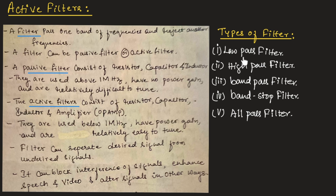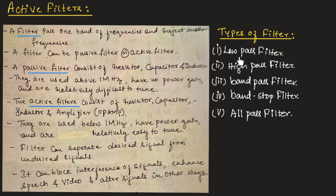A low-pass filter is one that will pass low frequencies and block high frequencies. A low-pass filter allows the signal with a frequency lower than a certain cut-off frequency to pass through, and it will attenuate the signal with frequency higher than the cut-off frequency. These low-pass filters are commonly used to remove high-frequency noise and to smooth the signal.